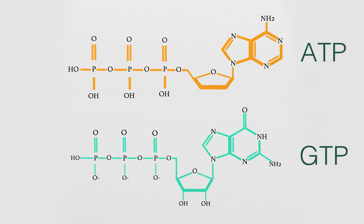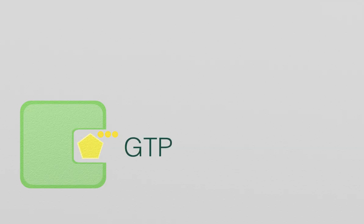Despite this similar structure, these two molecules serve different functions in the cell. ATP is used frequently as an energy source, while GTP, depicted here as a pentagon with three dots,